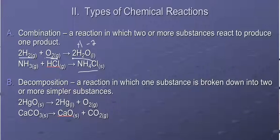Decomposition, the second type, you're taking one substance and you're breaking it down into two or more substances. The simplest type of decomposition is where you take a binary compound, like HgO, and you break it down into the elements that make it up, mercury and oxygen. So decomposition is exactly opposite of the combination.